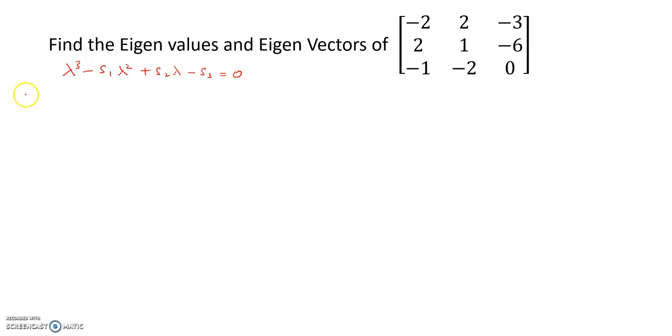Where S1 is the sum of the main diagonal entries, which is minus 2 plus 1 plus 0, which is equal to minus 1. And S2 is the sum of the minors of the main diagonal entries.